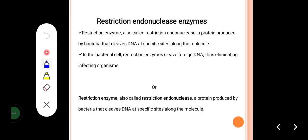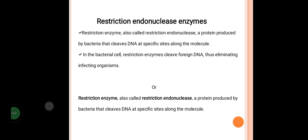Restriction enzymes, also called restriction endonucleases, are proteins produced by bacteria that clip the DNA at specific sites along the molecule. The main source is bacteria — they are isolated from different types of bacterial strains.